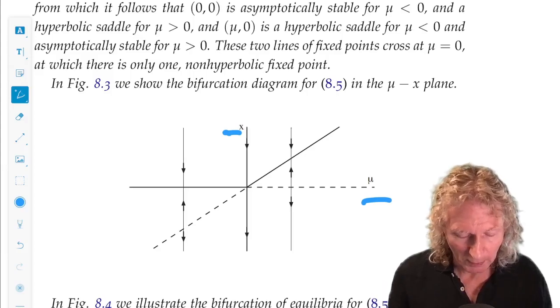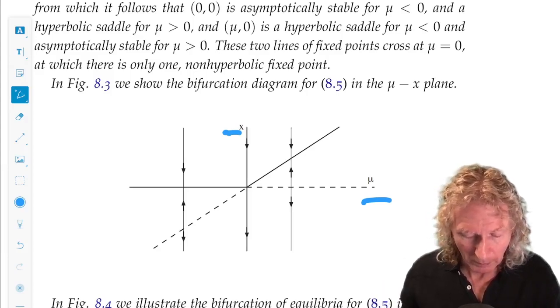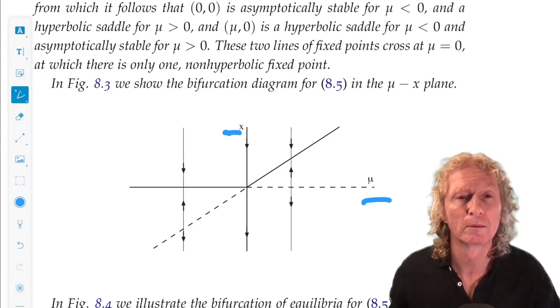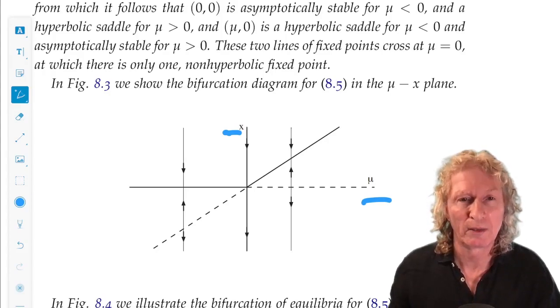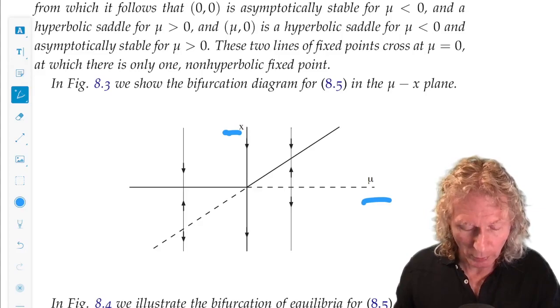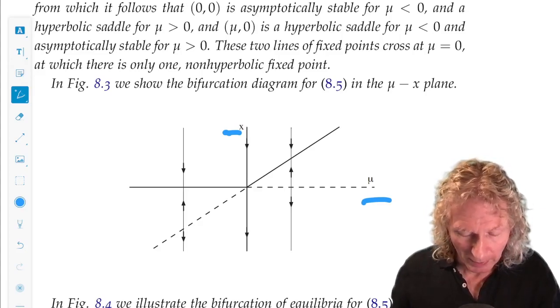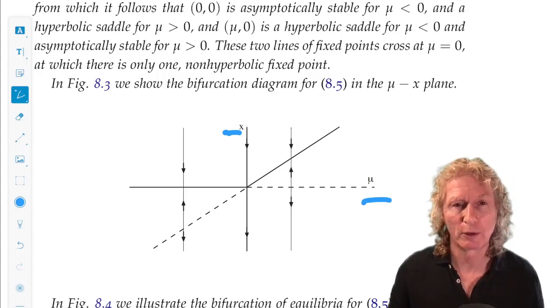What we see is that x equals 0 is an equilibrium point for every value of mu. And then we have mu equals x, the 45 degree line.